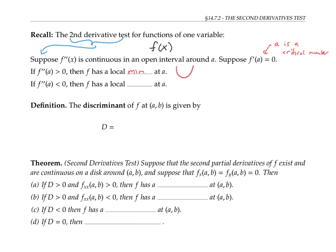If f double prime is less than zero, then f has a local max at a — it's concave down. The second derivatives test for functions of two variables is somewhat analogous, but instead of relying only on a single second derivative, we now have several second derivatives to consider.